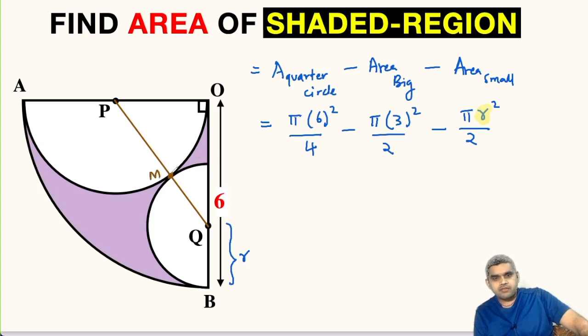You might be wondering why this point M is on this line segment PQ. For that, we have a theorem that if we have two circles and they are touching each other, this is the common point between these two circles. And if these two points are the centers, then if you join the centers, this line segment will pass through the common point of contact. Using this theorem, we get that if we join the center point P and center point Q, the common point of contact M will lie on this line segment.